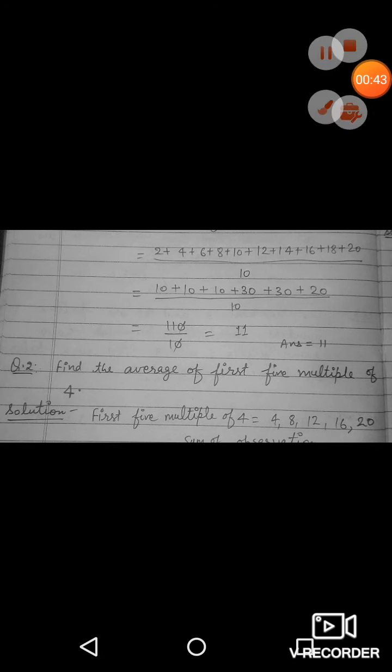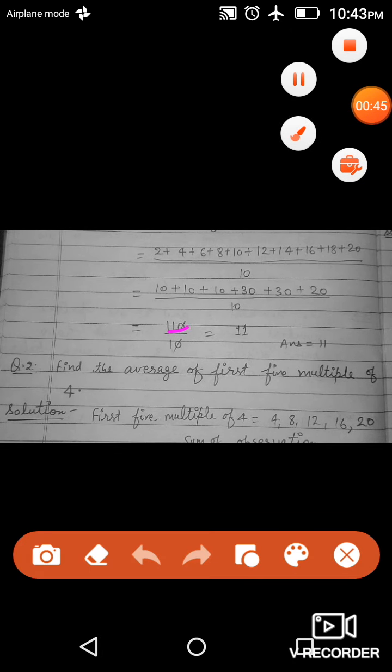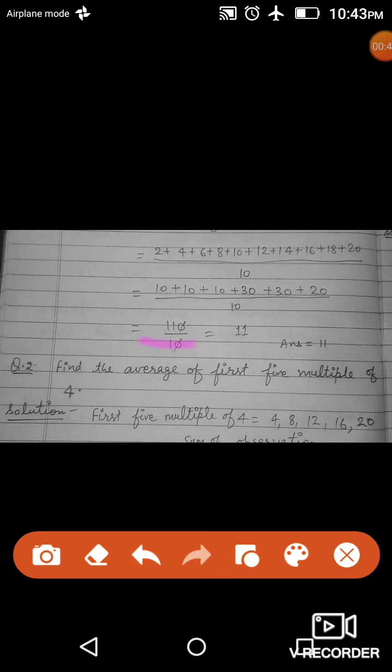Average is equal to sum of observation divided by number of observations. Sum of observation divided by number of observation 10. When we add the sum of observations this is 110 and the number of observations is 10, then 110 divided by 10 is equal to 11. Finally, the answer is 11.